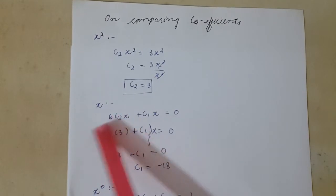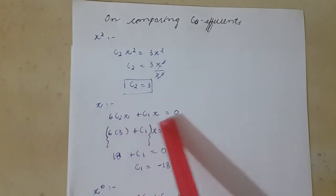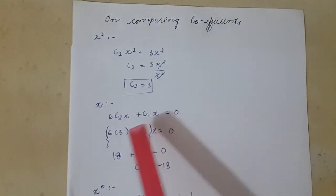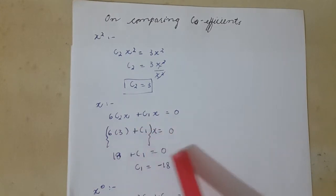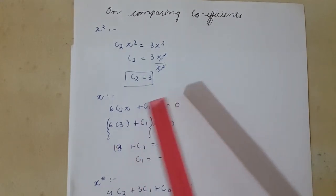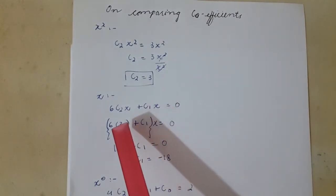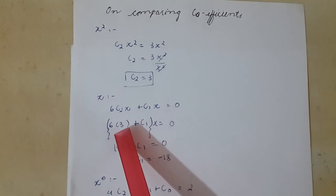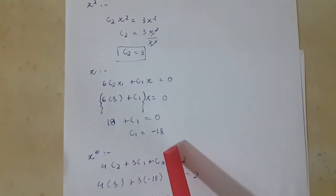Now for x: We have 6c2·x + c1·x = 0. I simply take x common here and x will cancel by dividing. Putting the value of c2, c1 = -18.